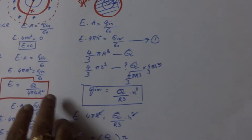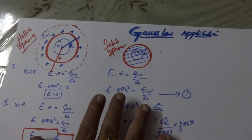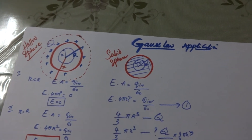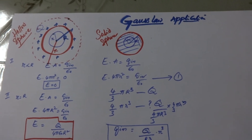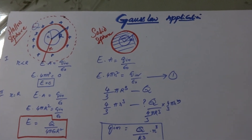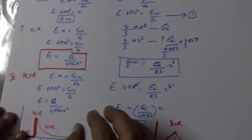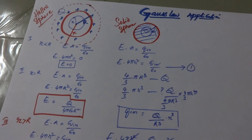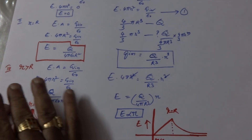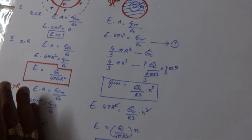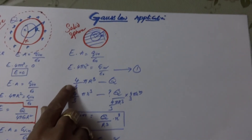In all Gauss Law applications, the only thing you have to do is select the Gaussian surface correctly. If you have selected the Gaussian surface, half the work is already done. Then you apply E·A equals charge inside the Gaussian surface divided by ε₀. The other work is to find out how much charge is enclosed in the surface. In the case of the solid sphere, we had to work out the charge Q_in for the smaller sphere since the charge is uniformly distributed.